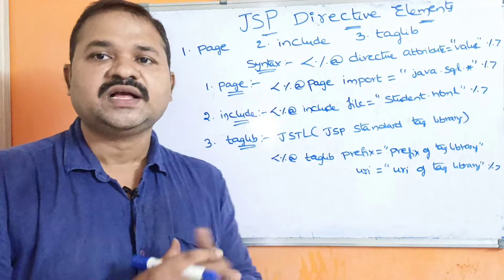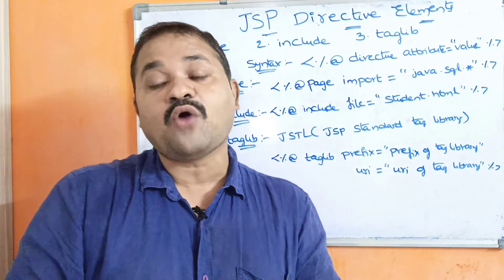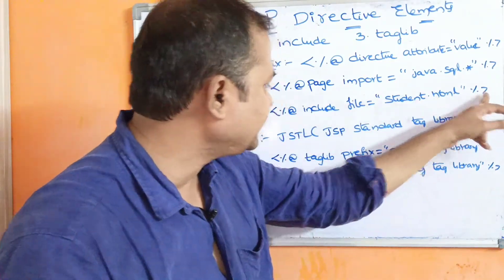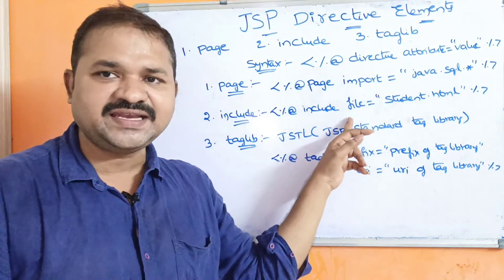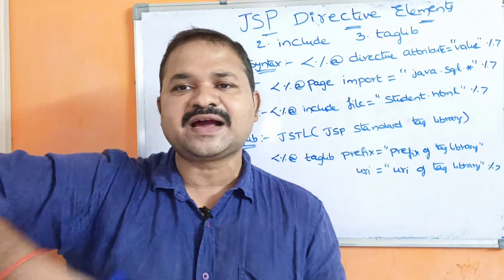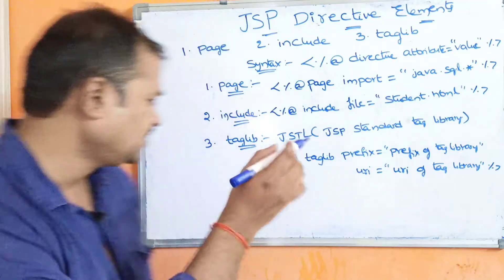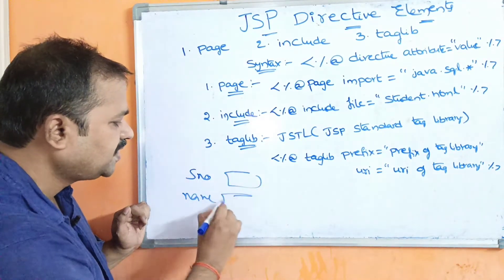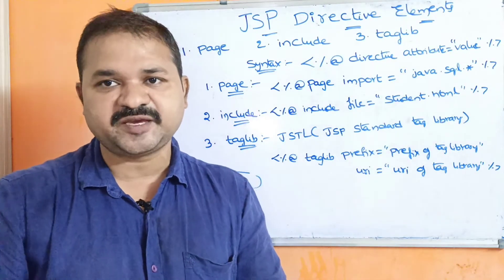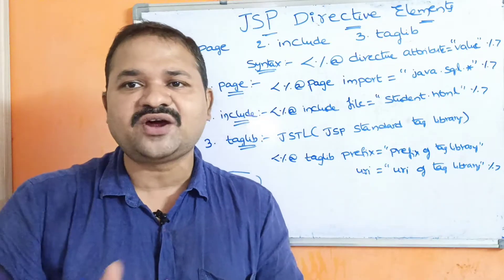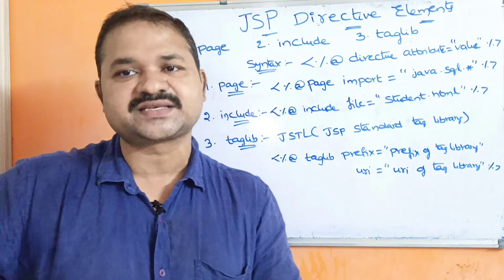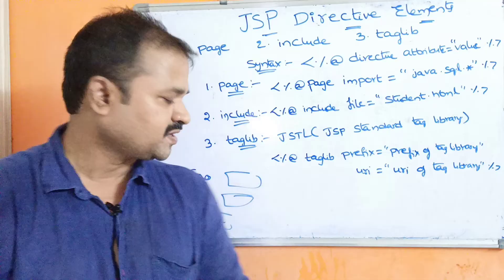Include directive is mainly useful to include the content of an HTML page or JSP page in our program. The directive name is include, and the attribute is file. For example, file equals student.html — so that the student.html content will be displayed in our program. Instead of an HTML page, we can also use a JSP page, such as student.jsp, and its content will be displayed in our program.